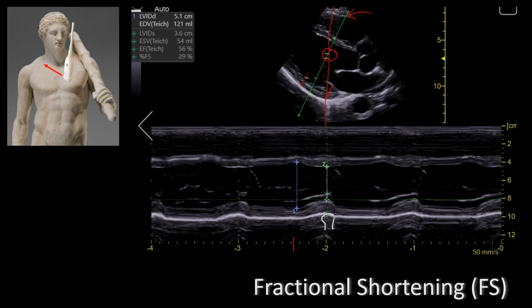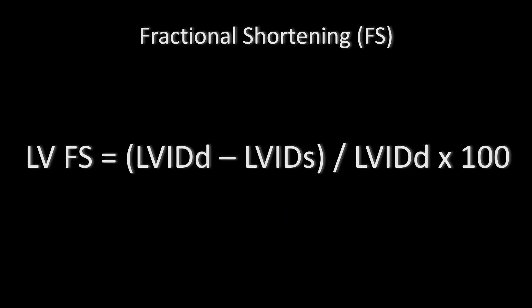Before we analyze the numbers I just want to show you which equation we're going to be using for the fractional shortening. The left ventricular fractional shortening is equal to the left ventricular internal diameter at the end of diastole (LVID-d) minus the left ventricular internal diameter at the end of systole (LVID-s), divided by the left ventricular internal diameter at the end of diastole, times 100.